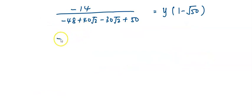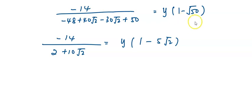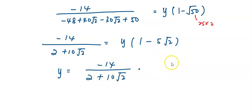Simplifying further, I got negative 14 over 2 plus 10√2. Here, √50 can be simplified into 5√2, because √50 equals √(25 times 2), which splits into √25 multiplied by √2. √25 is 5. In order to get y, I will divide both sides by 1 minus 5√2.